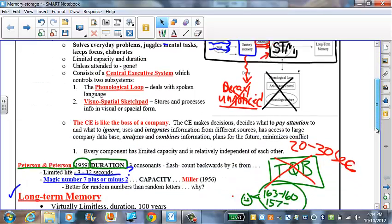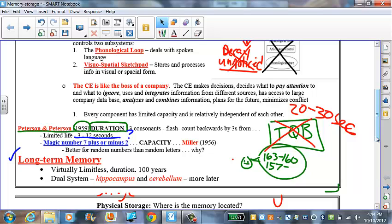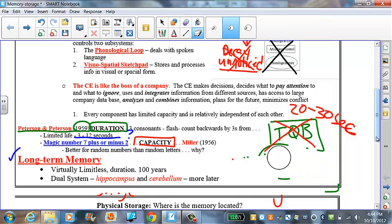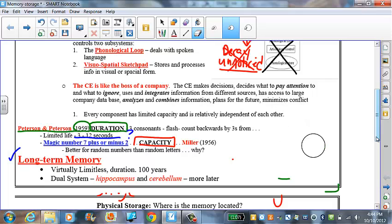Now, what about capacity? Well, capacity is probably the most famous number in memory. How many things can it hold? Miller did that study in the mid-1950s with capacity.